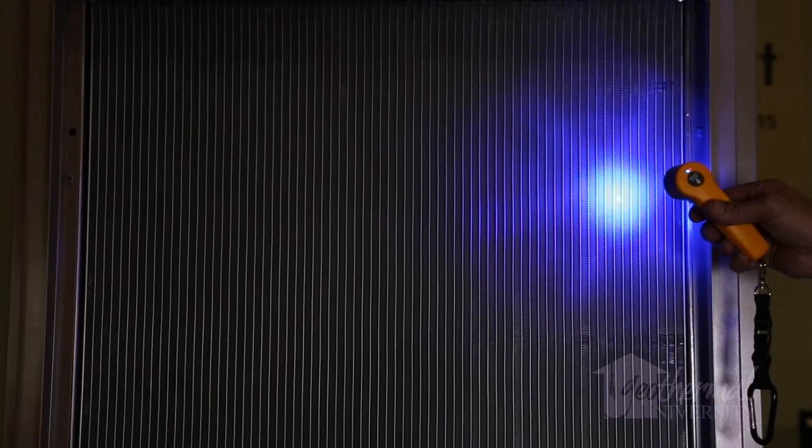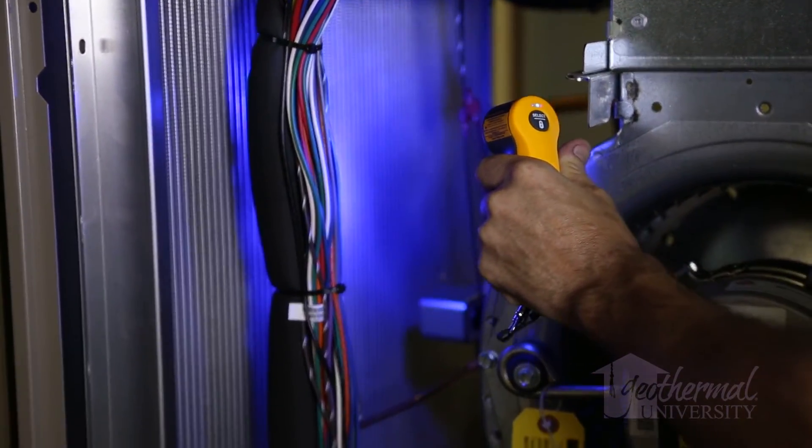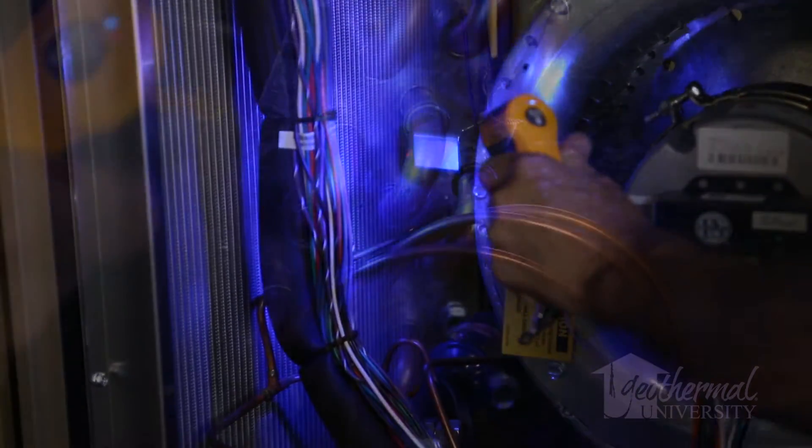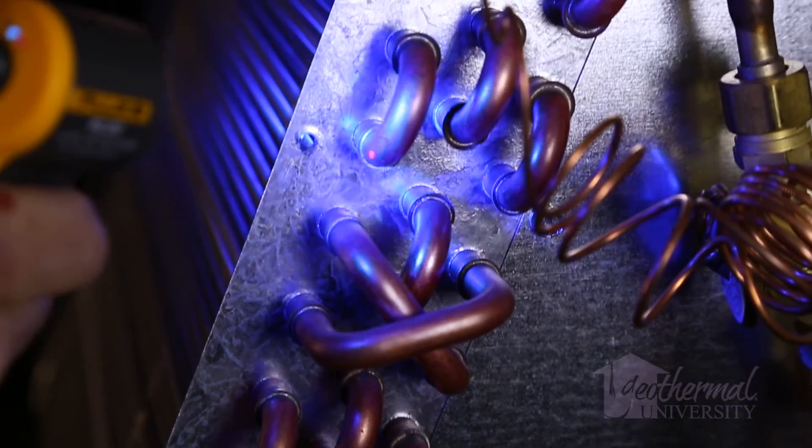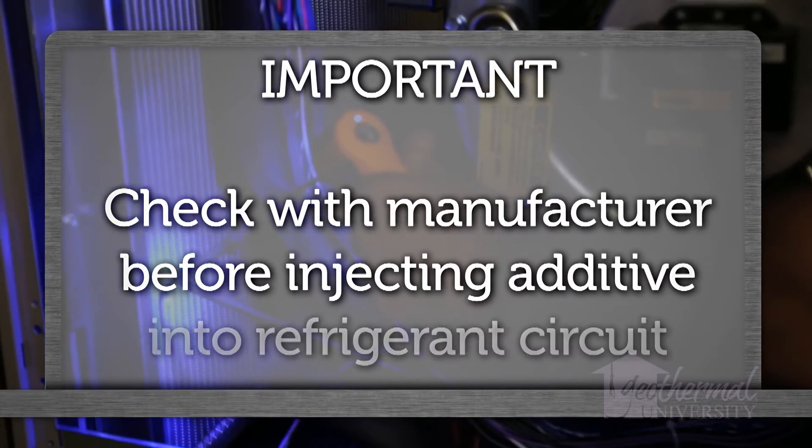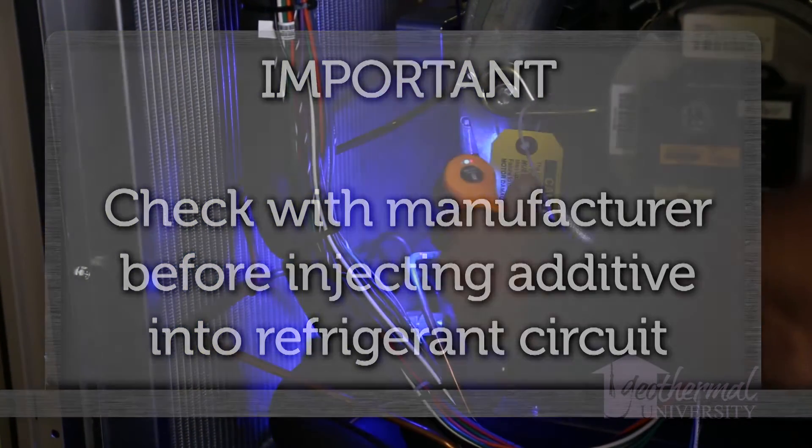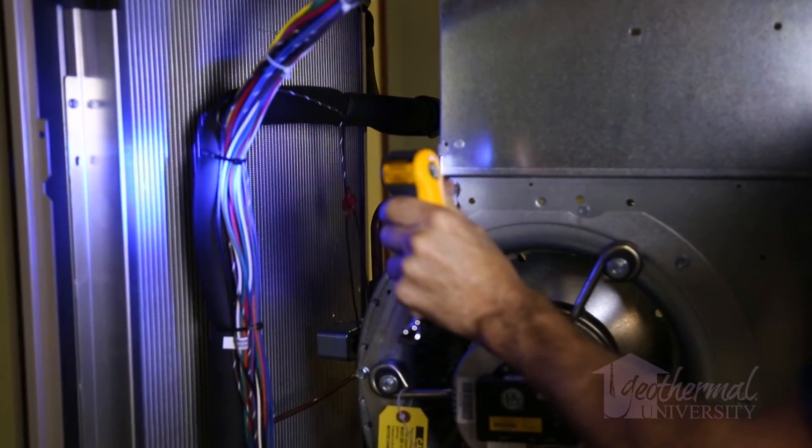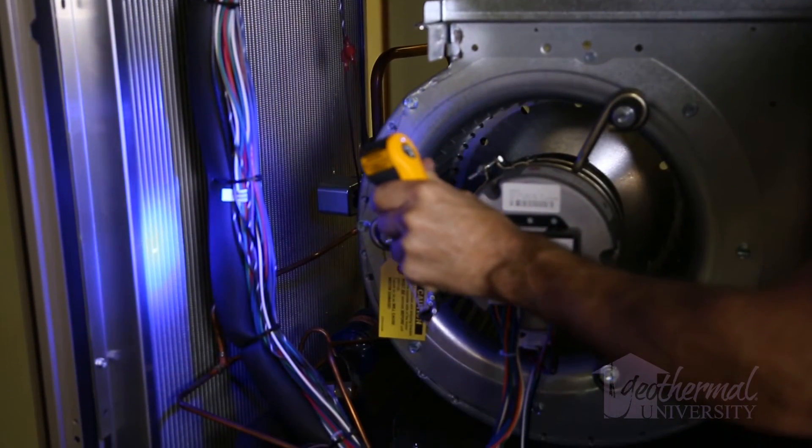This method requires adding fluorescent dye to the air conditioning or refrigeration system. The dye then mixes with the lubricant and circulates with the refrigerant throughout the system. Wherever refrigerant leaks out, so does the dye. When the system is scanned with an ultraviolet or blue light lamp, the dye glows a bright yellow green color pinpointing the location of the leak. Consult with the equipment manufacturer and or compressor manufacturer before injecting any additive into the refrigerant circuit. Many manufacturers do not approve of dye additives. Make sure the specific dye is approved by the equipment manufacturer.